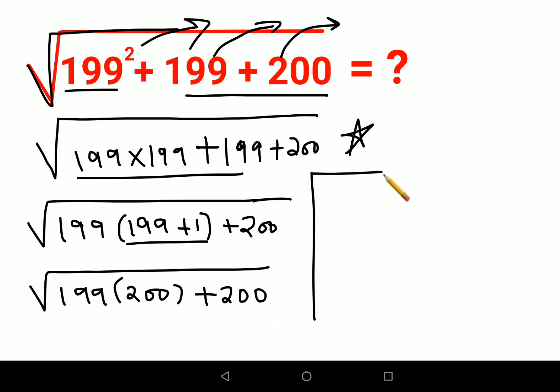In between these two, I can take 200 outside. I will be left with 199 plus 1.